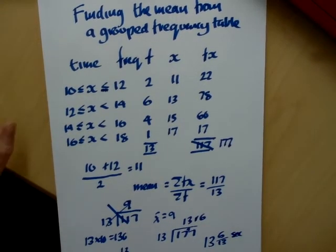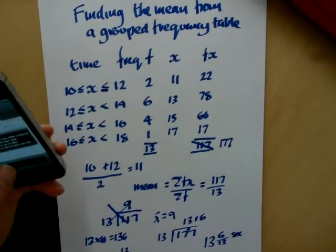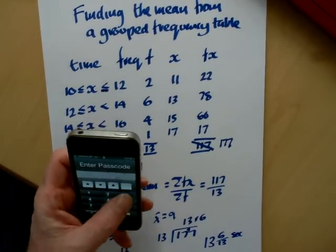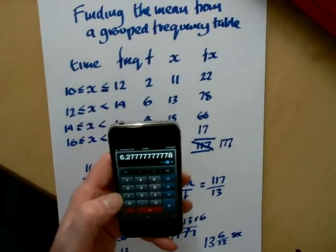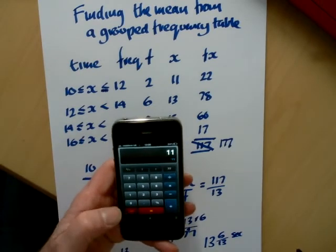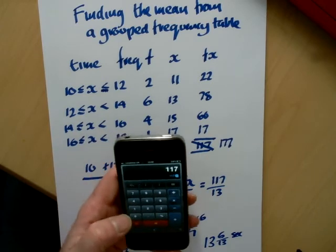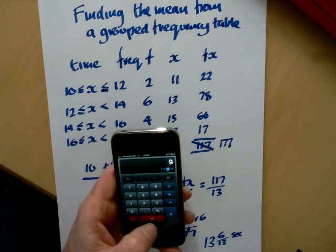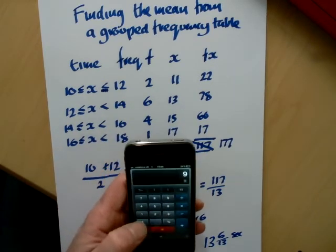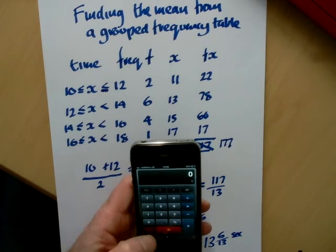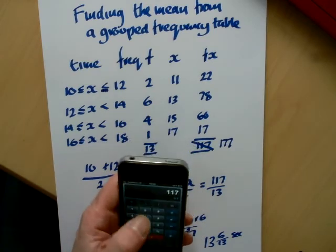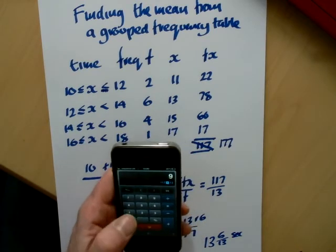Now if we did that with a calculator, we'll just quickly do that. So cancel what I've previously done. So 117 divided by 13. 117 divided by 13.